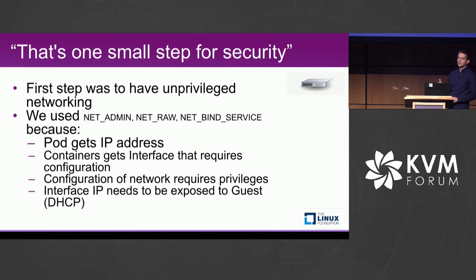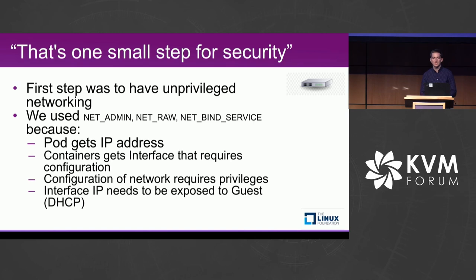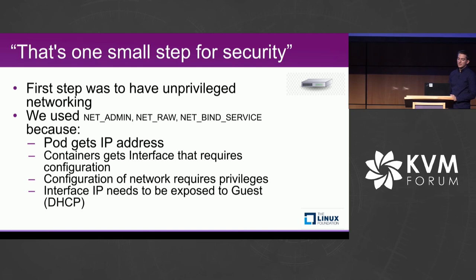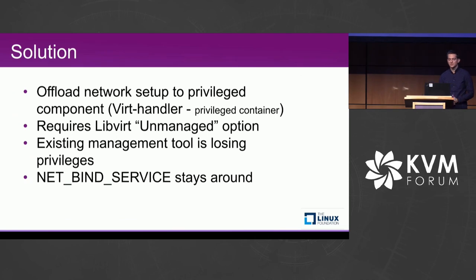Some background: Kubernetes has a default network. When a workload is submitted, it gets an IP address and the container gets a network interface. To connect the interface to the guest, QEMU provides options like SLIRP — an unprivileged way — or through a TAP device. However, configuring the TAP device is a privileged operation, and most networking configuration requires privileges. We also need to provide the IP address to the guest using standard DHCP. The solution is to offload networking setup to the privileged virt-handler component.